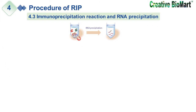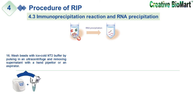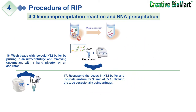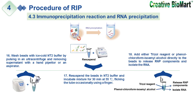Sixteenth, wash beads with ice-cold NT2 buffer by pulsing in an ultra-centrifuge and removing supernatant with a hand pipette or aspirator. Seventeenth, resuspend the beads in NT2 buffer and incubate mixture for 30 minutes at 55°C, flicking the tube occasionally. Eighteenth, add either Trizol reagent or phenol-chloroform-isoamyl alcohol directly to the beads to release the RNP components and isolate the RNA from the immunoprecipitated pellet.